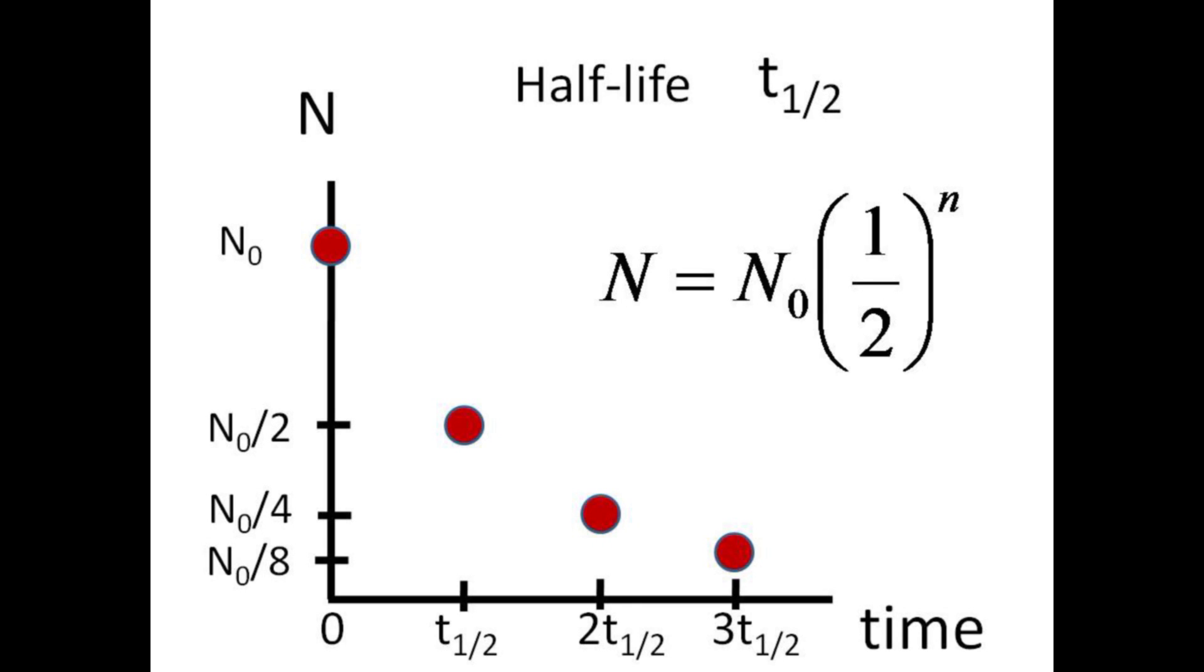This decay of nuclei may be expressed as capital N, the number of radioactive nuclei remaining after little n number of half-lives, equals N0, the original number in the sample, times one-half multiplied by itself little n times.